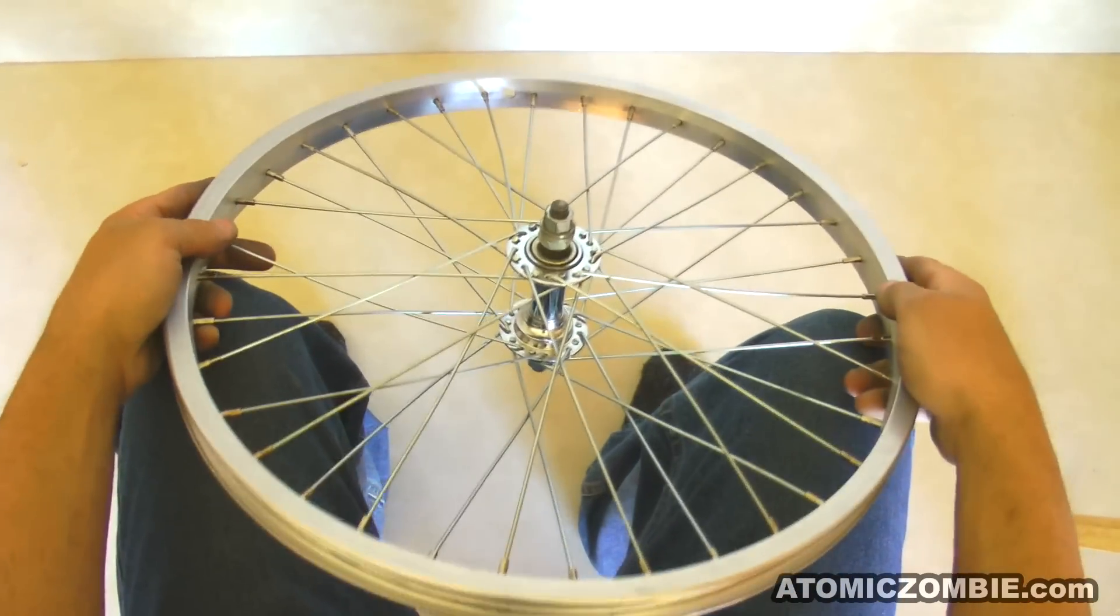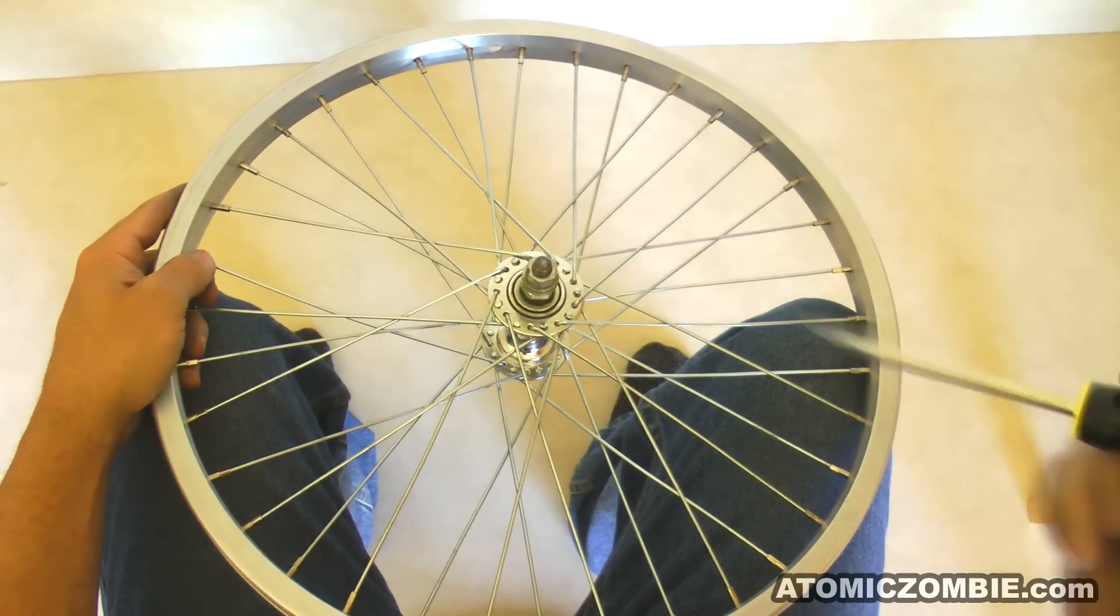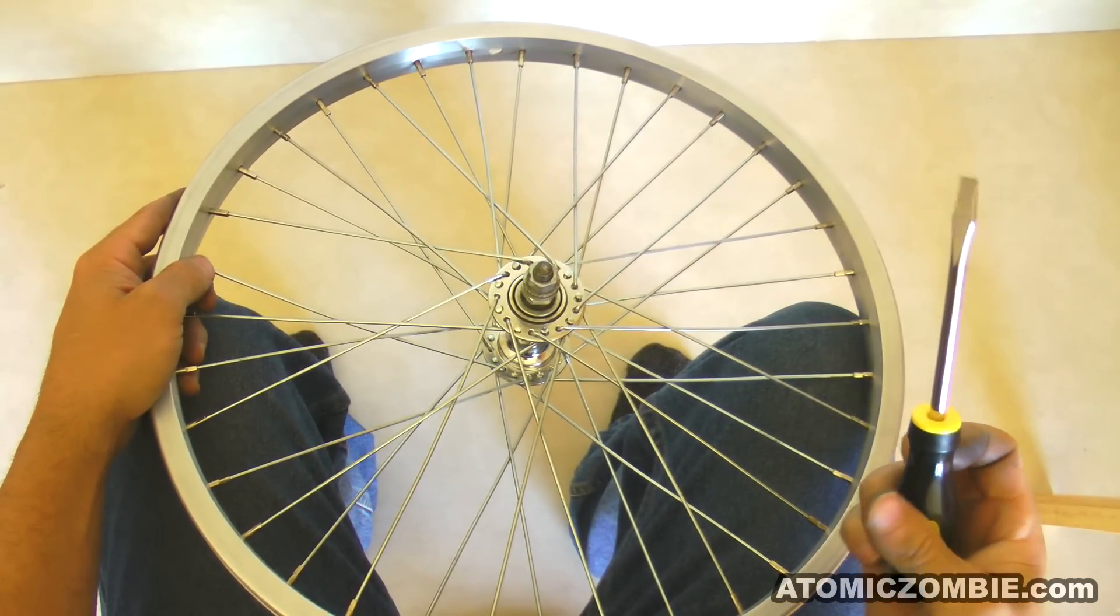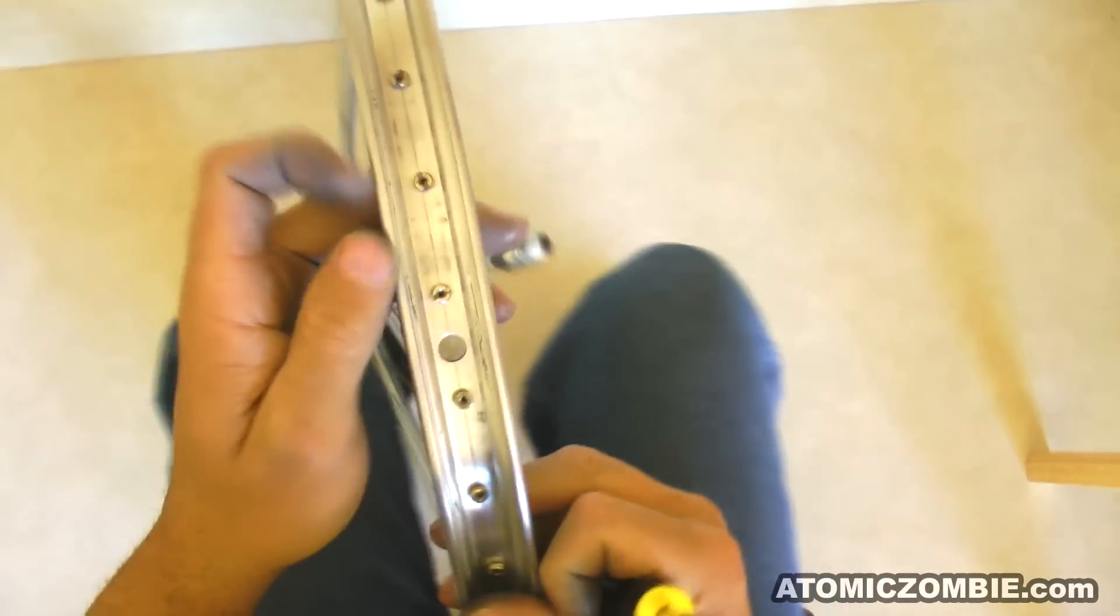Now that you have each spoke nipple tightened as much as you can by hand, turn them all another two turns using the flathead screwdriver, once again starting at the valve hole.